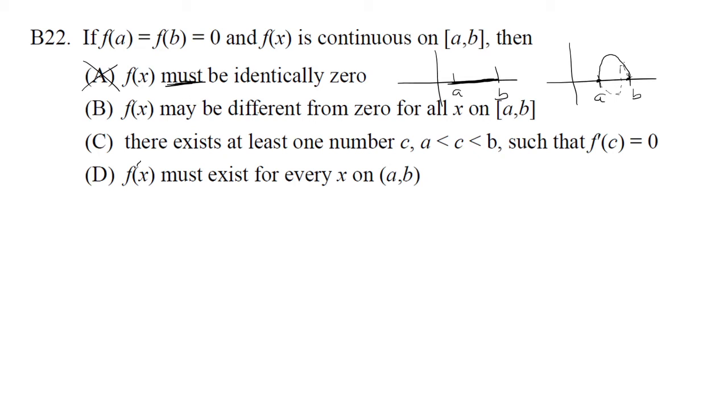Part B, f of x may be different from zero for all x. This is what we just talked about in Part A. It doesn't have to be zero throughout the interval. It could be like an upside-down parabola or an absolute value. There could be many different functions where the endpoints are the same. So this is correct.